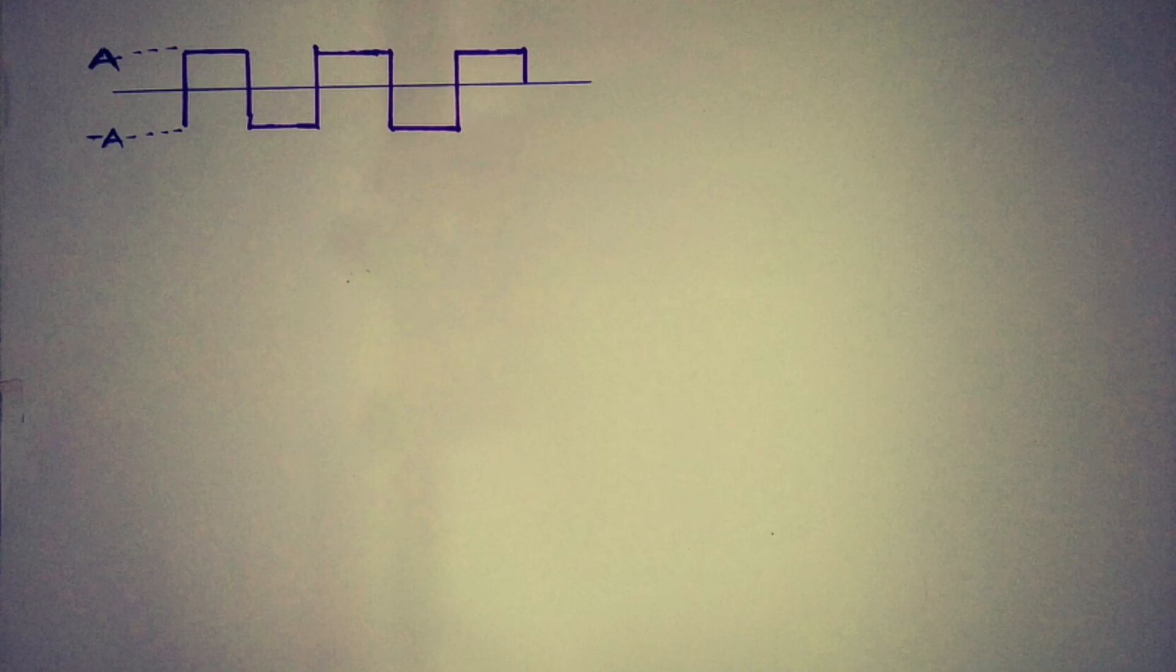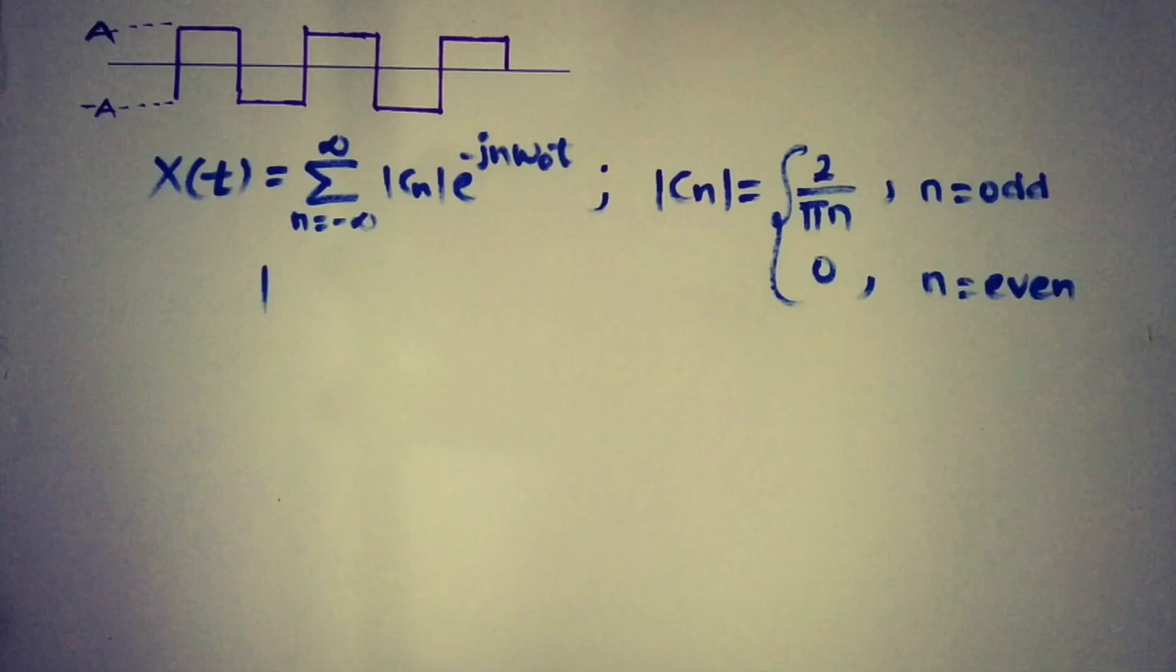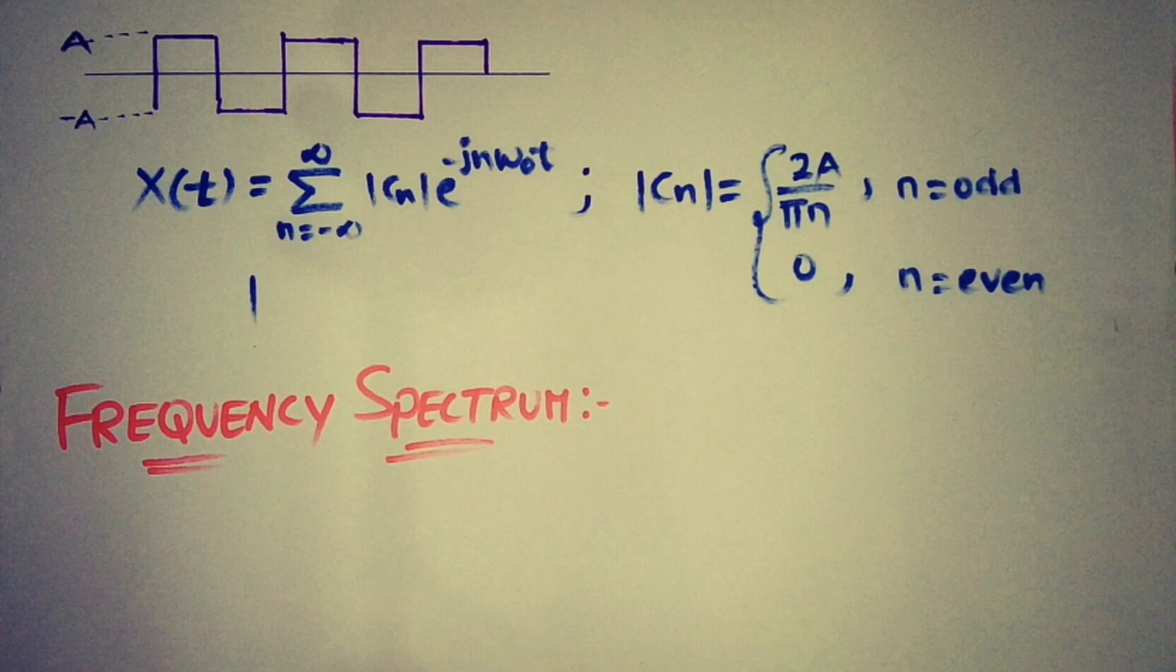Take a square wave x of t of frequency omega 0. It is expressed in exponential Fourier series, and the magnitude of the harmonics cn is derived from its formula and has a magnitude of 2 by pi n for odd number.